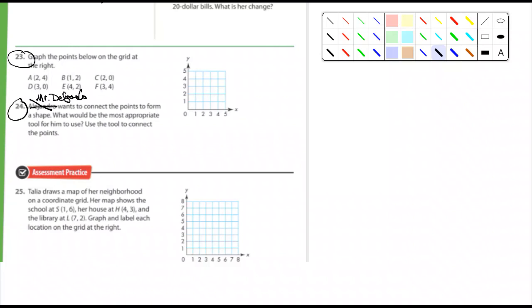All right. And 25, you can answer that. Talia draws a map of her neighborhood on a coordinate grid. Her map shows the school at 1-6, her house at 4-3, and the library at 7-2. It says graph and label each location on the grid. Yeah, you guys can do that. Okay. Going to end this. Bye. Bye. Stop the middle of 40.